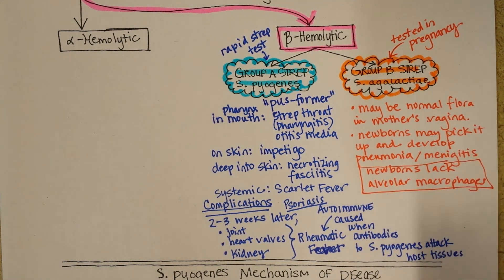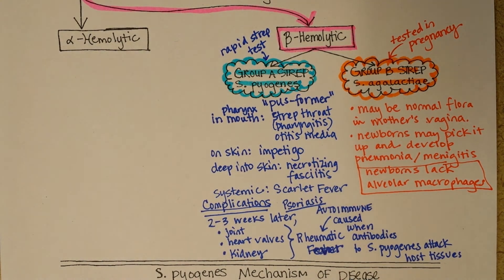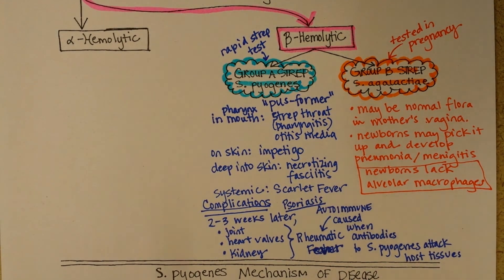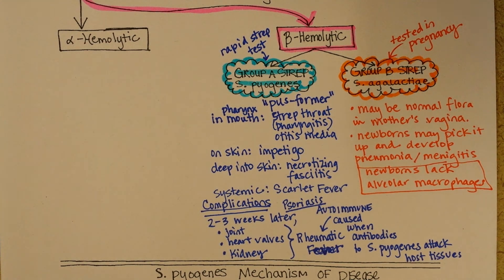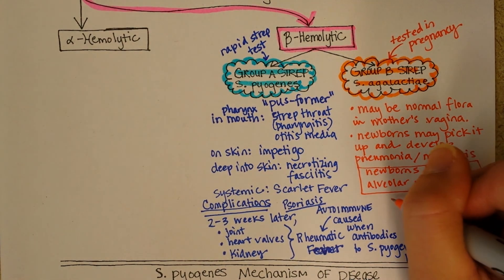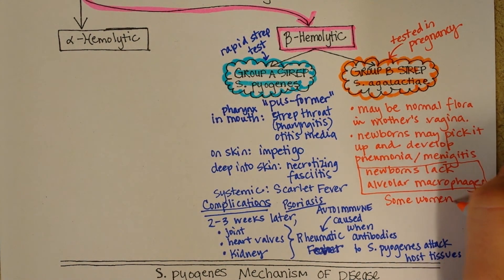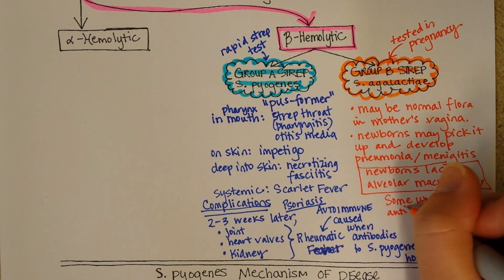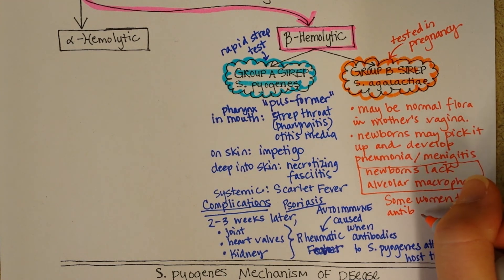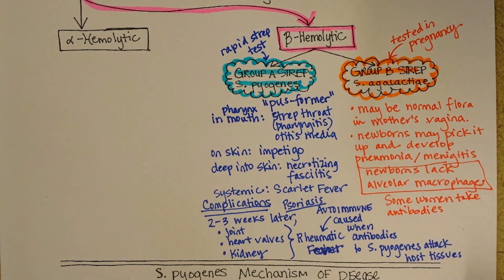Their whole body is lacking in normal flora when they're first born — they have to pick that up from the birth canal and their immediate environment to help protect from pathogens. Because of this, some women will take antibiotics during delivery to try and kill off all the Strep agalactiae before the baby passes through the canal.